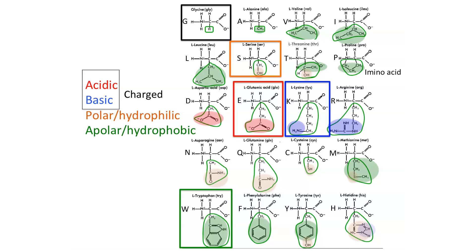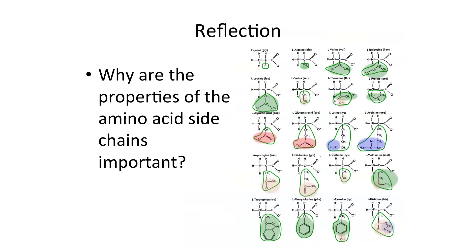Perhaps one day you will need to know all of them. It's important to remember that proline is an imino acid rather than an amino acid, and that this has an impact on the shape of the backbone. Why do you think the properties of amino acid side chains are important? It would be good to think about why the properties of the side chains are so important for protein structure.